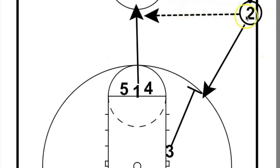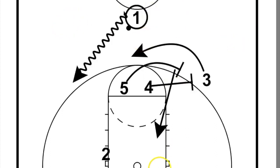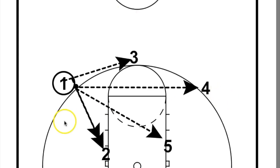I would say your first option is your two man. Your second option is really, I think, the screener, the second screener, because he can slip or he can dive after he screens.